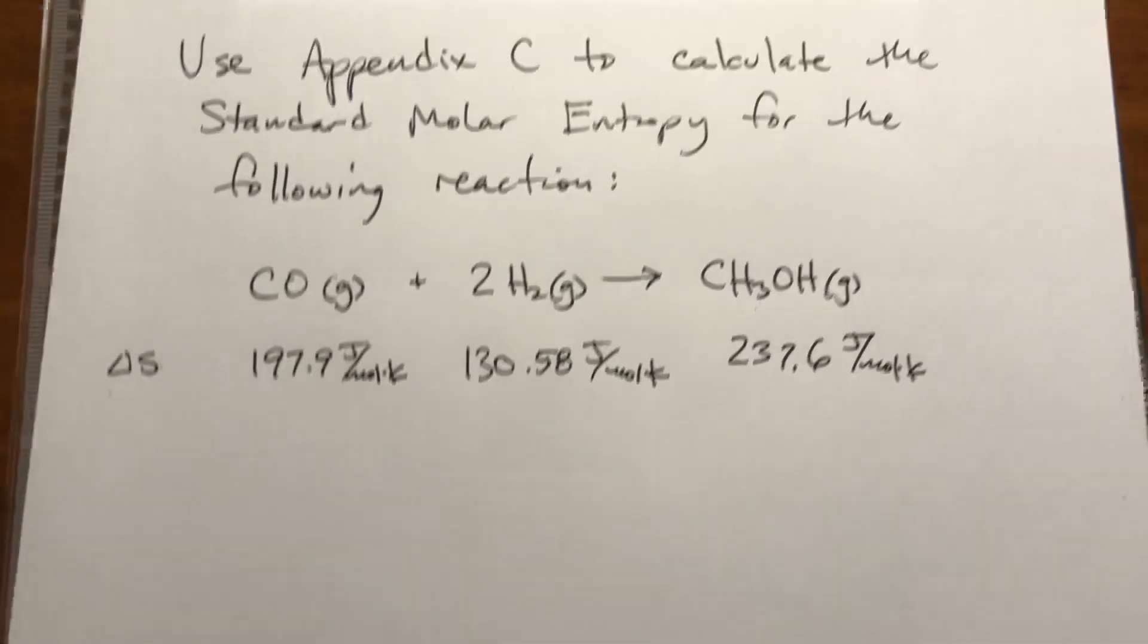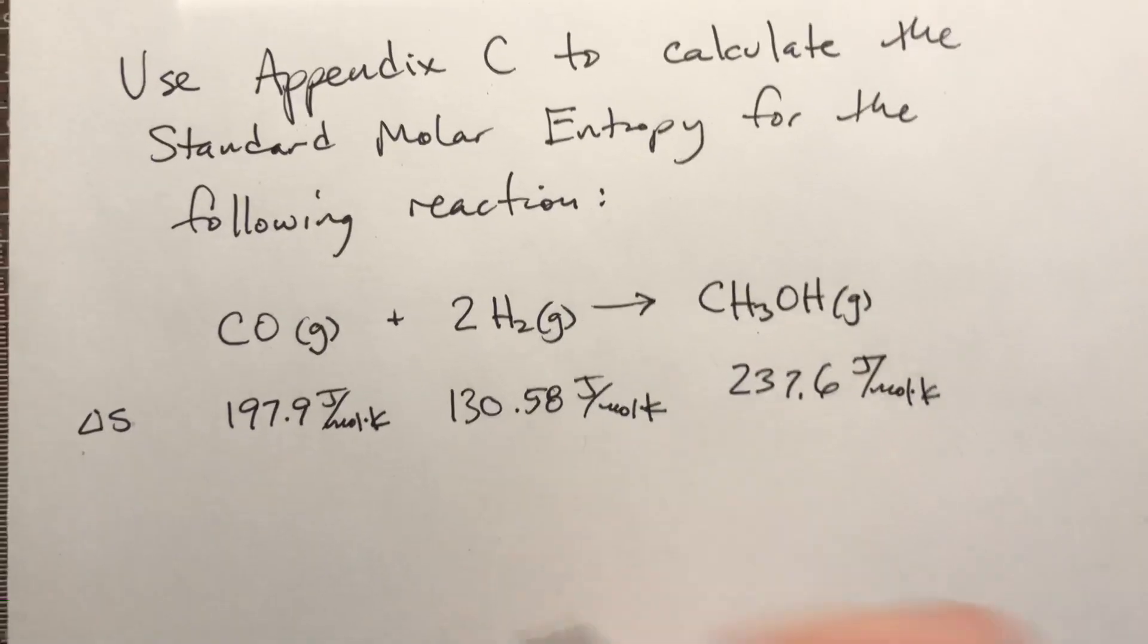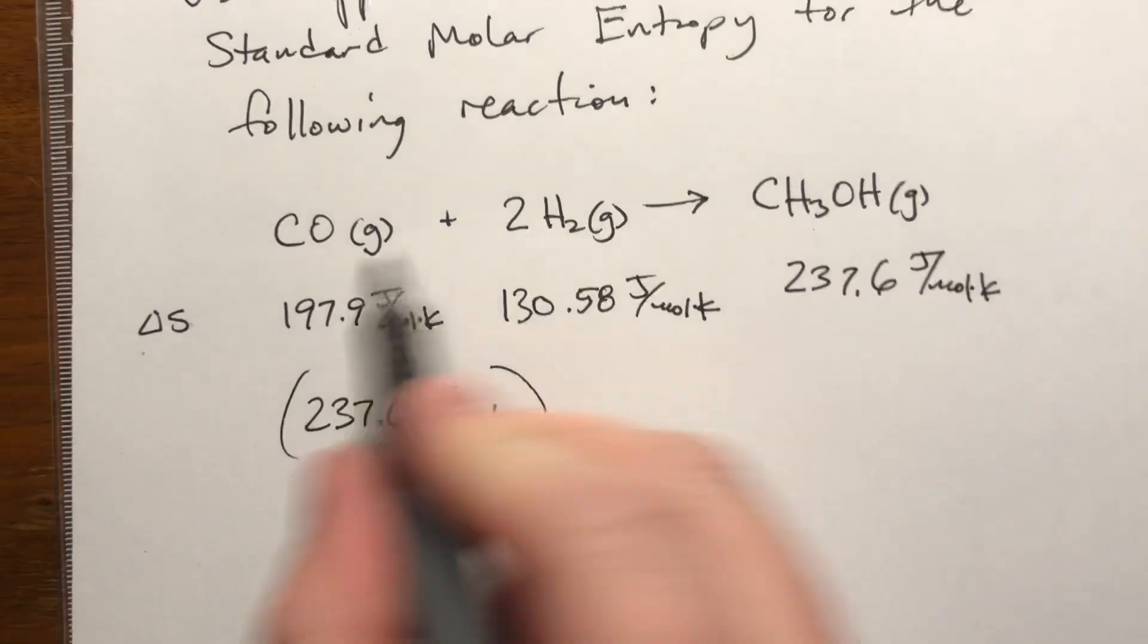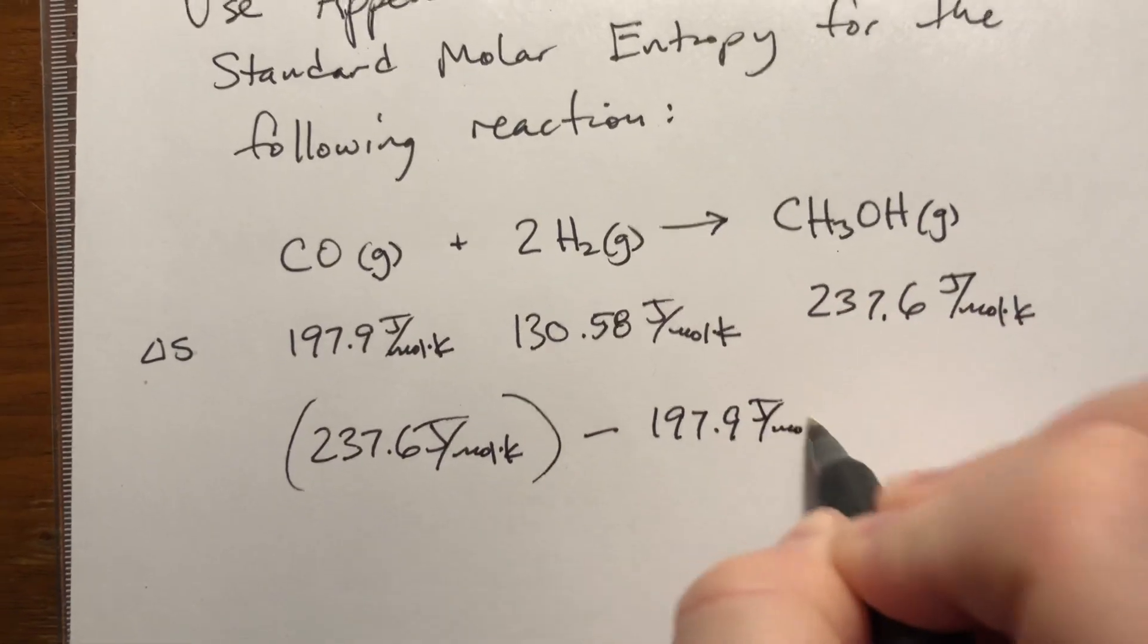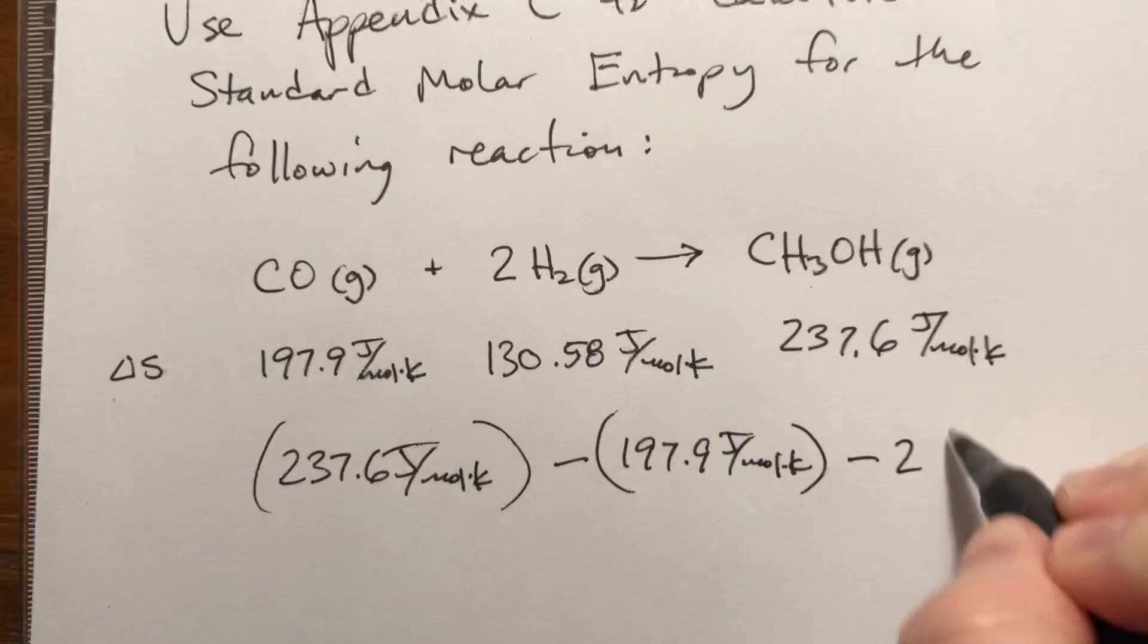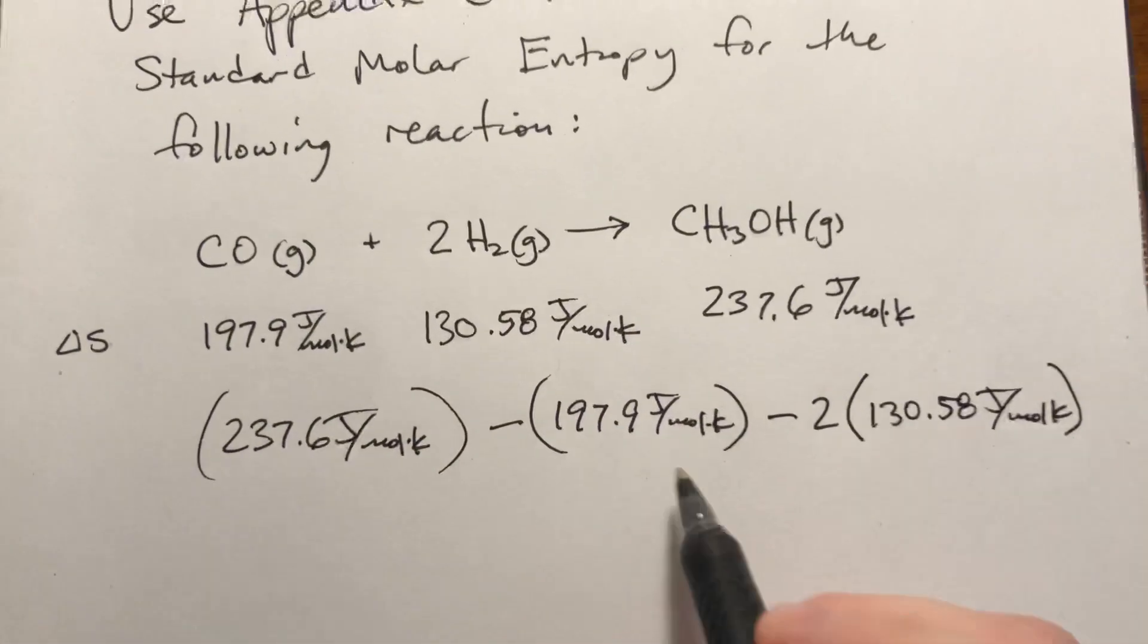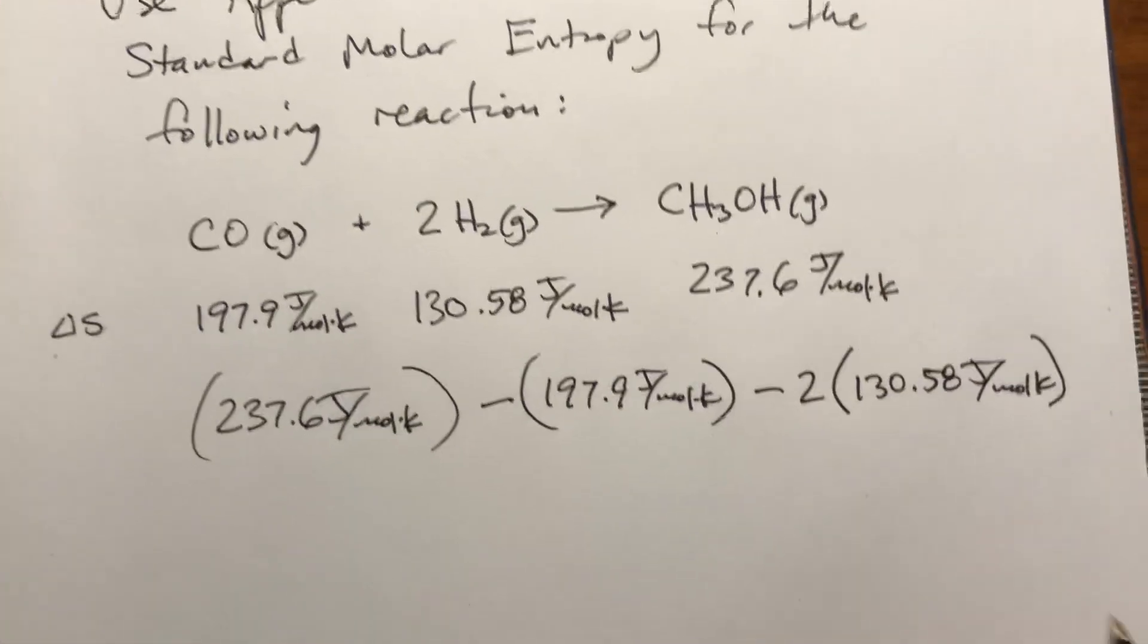To solve this problem, we take the products minus the reactants times the coefficients. Products: 237.6 joules per mole Kelvin. Minus the reactants: 197.9 joules per mole Kelvin for CO, and there are two hydrogens, so 2 times 130.58 joules per mole Kelvin. If you wanted to add the reactants together first and then subtract it all off, it's the same thing—you'd just have brackets.